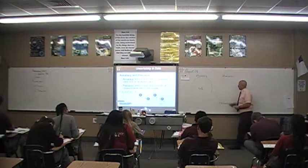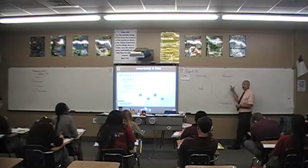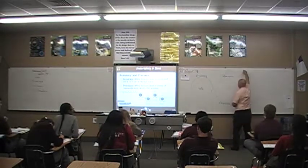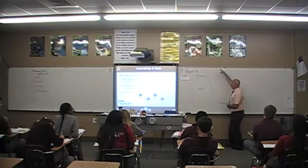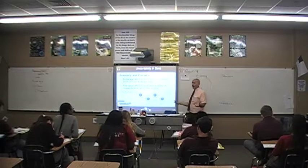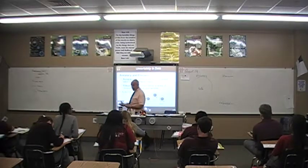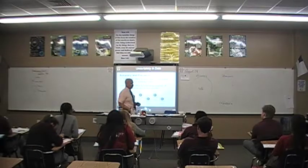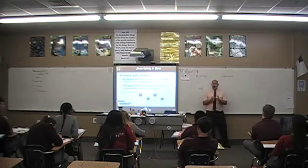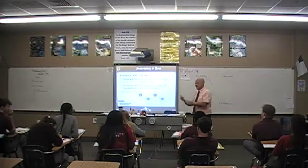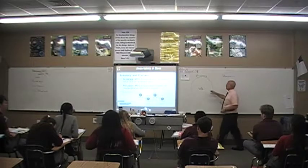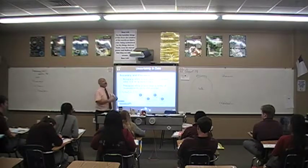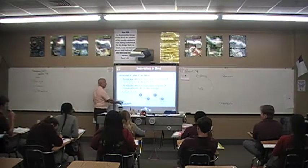Accuracy is how close they are to the real answer. Can we have both? Yes — if all shots are right in the middle, we have good accuracy and good precision. Can we lack both? Yes — one up here, one over there, one off the chart: that's horrible precision and horrible accuracy. In science, these are really important because we want good precision, meaning our lab procedures are very good and our instruments can measure to a certain level of precision.